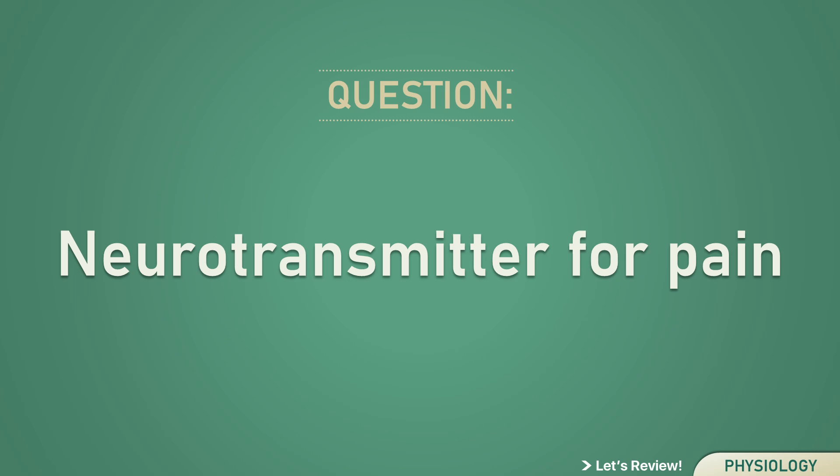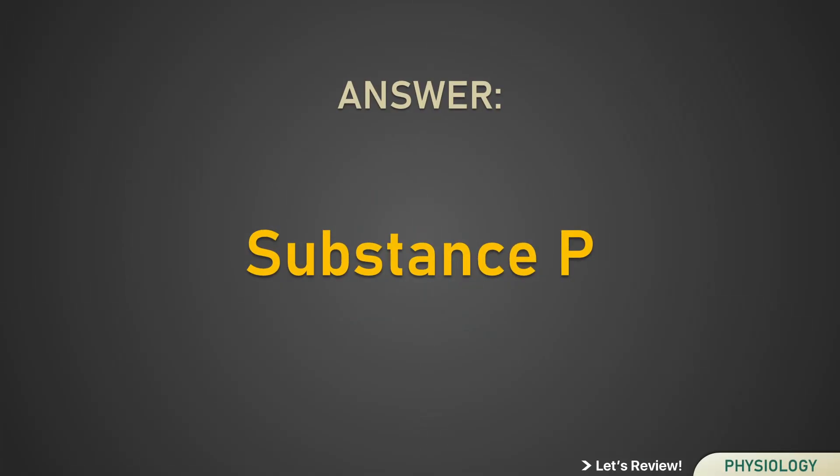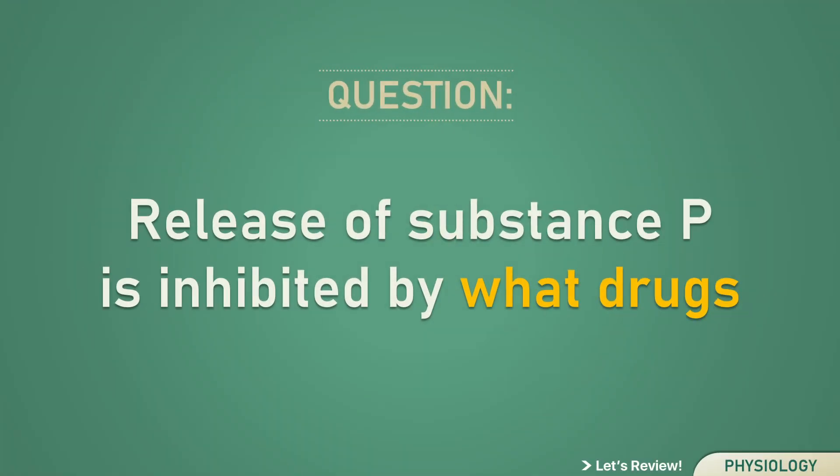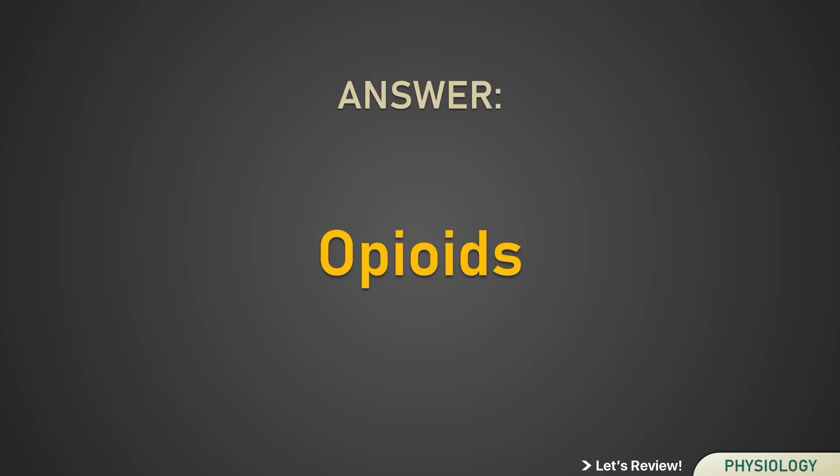Neurotransmitter for pain. Substance P. Release of substance P is inhibited by what drugs? Opioids.